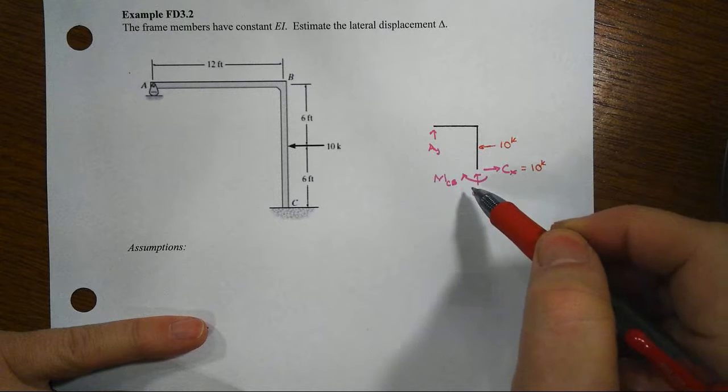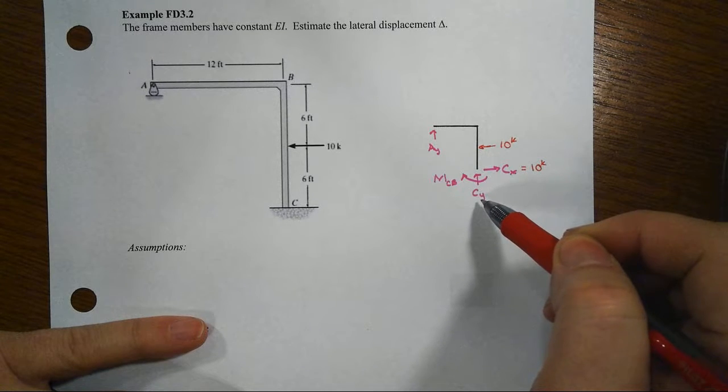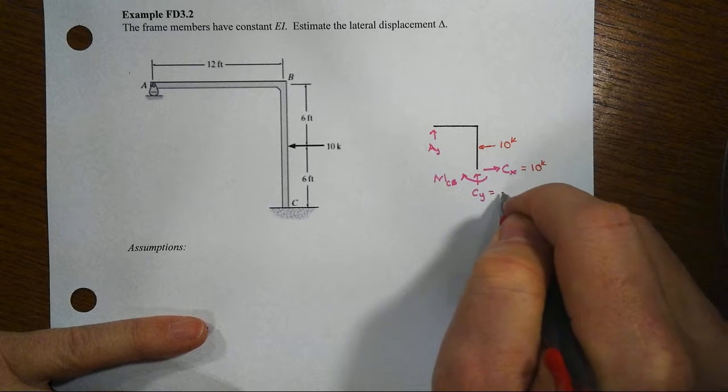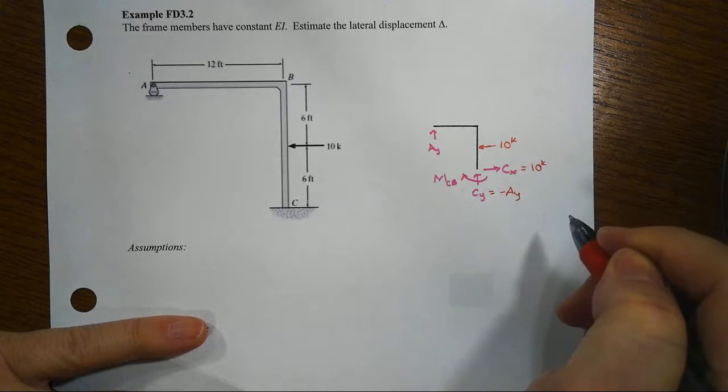With no vertical forces happening here, it means that AY and CY would have to tend to be equal and opposite. Don't know what the magnitudes are yet.